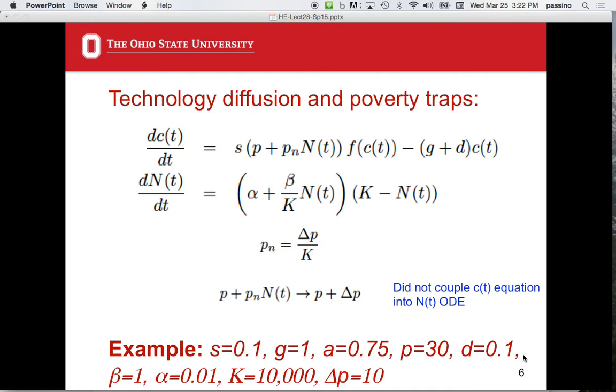I guess when you pull it out in front, you assume that your capital affects alpha and beta kind of in the same way. But if you put it inside the parentheses and you make them function, then you say that capital affects alpha differently than it affects beta. Exactly. And you can put capital, does it make sense to make it K of C?